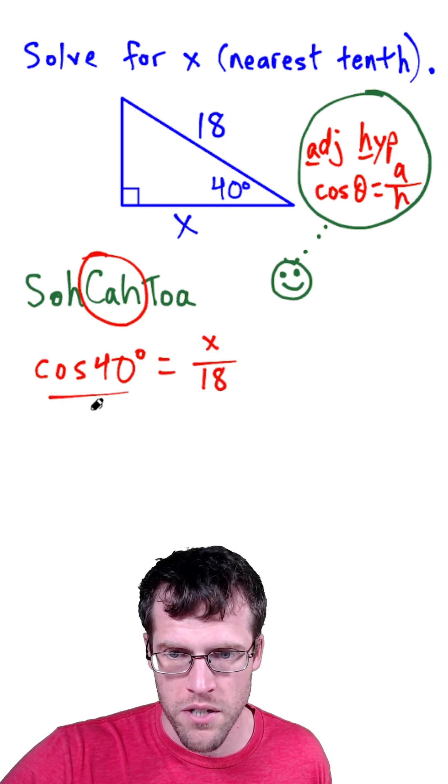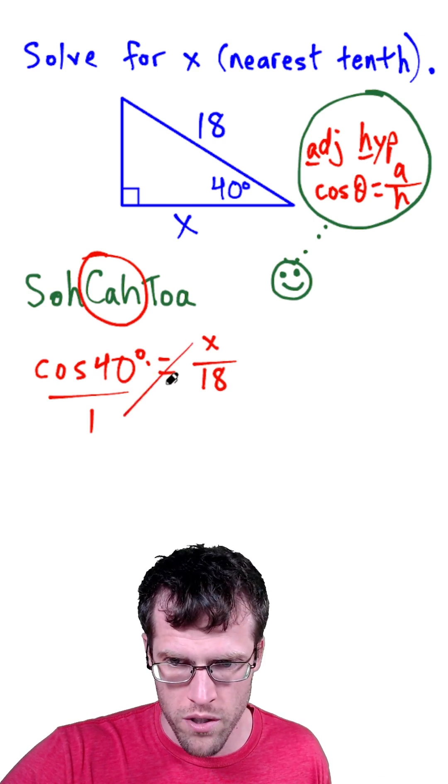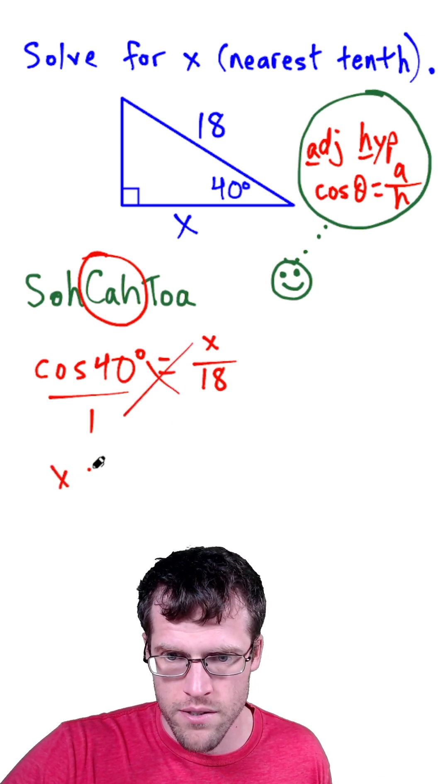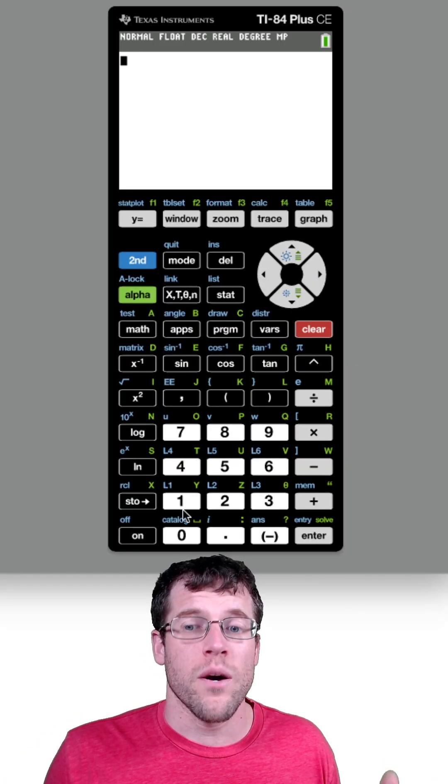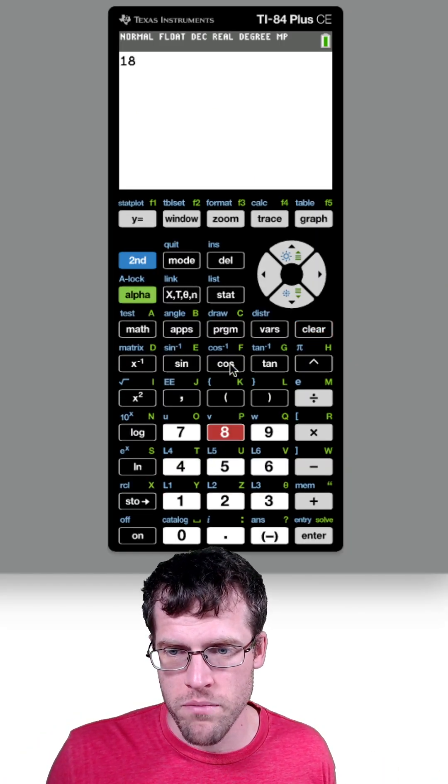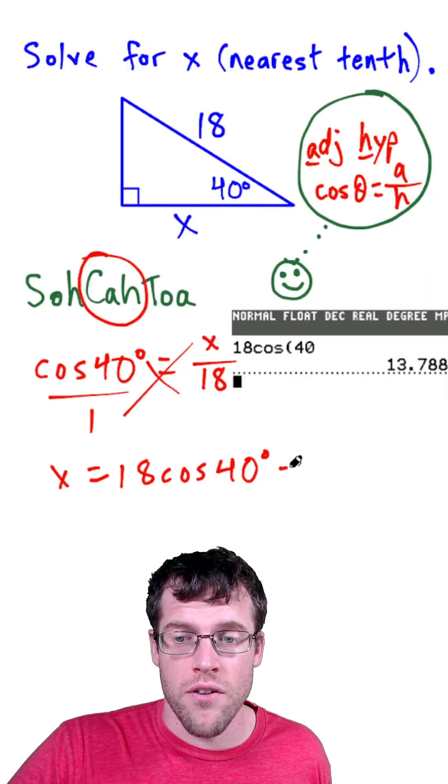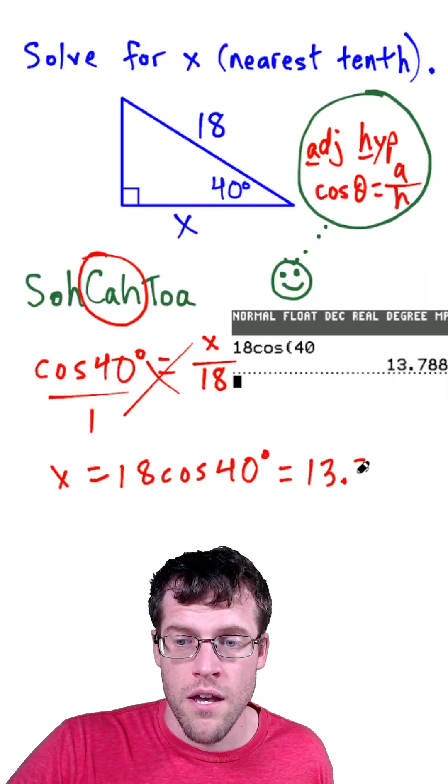Now we just do the algebra here, we're going to set up cosine 40 over one and cross multiply, and we have x is equal to 18 times cosine of 40 degrees. So now we just type this in and make sure that you're in degree mode so you get the right answer. To the nearest tenth our answer works out to 13.8.